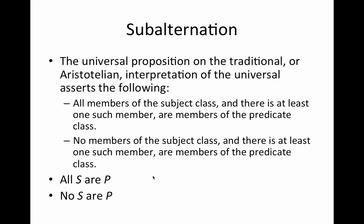We begin with sub- and superalternation. As a reminder, the universal proposition on the traditional or Aristotelian interpretation asserts the following: for the affirmative, all members of the subject class — and there is at least one such member — are members of the predicate class. For the negative, no members of the subject class — and there is at least one such member — are members of the predicate class.